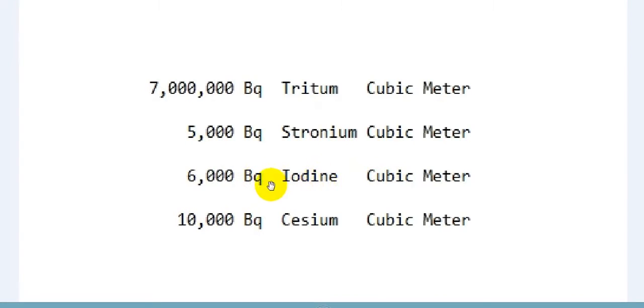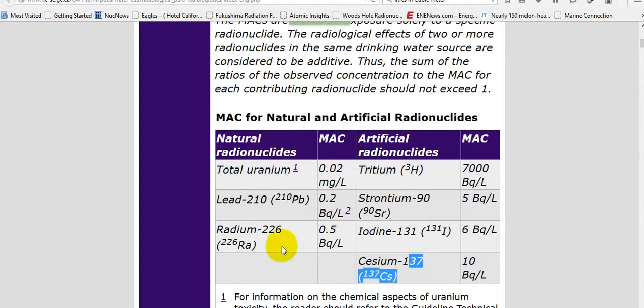6,000 becquerels of iodine is acceptable. That's an ongoing constant chain reaction. But there's 10 times more iodine-131, 10 times more iodine-132, 30 times more iodine-133, 31 times more iodine-129 with a 15 million year half-life. Cesium-137, there's 90 times more strontium. Strontium is produced in a ratio of 100 to 1 cesium-137.